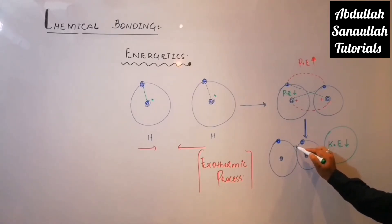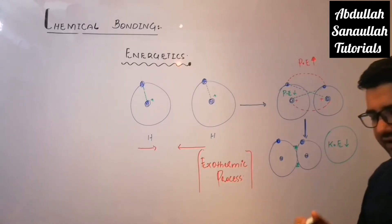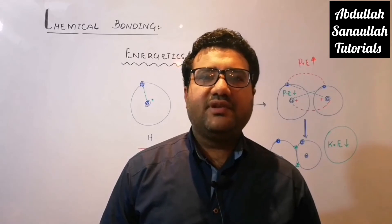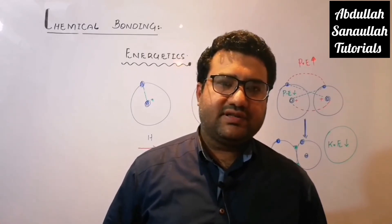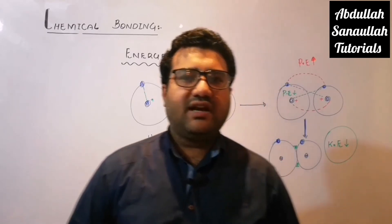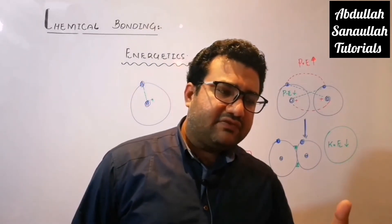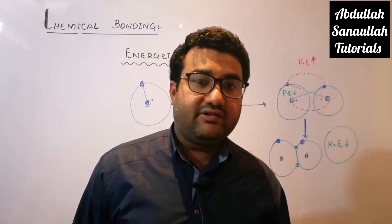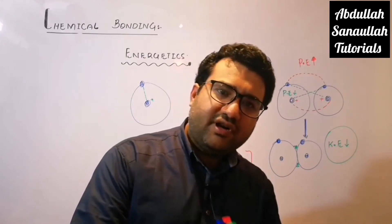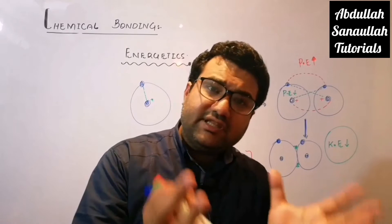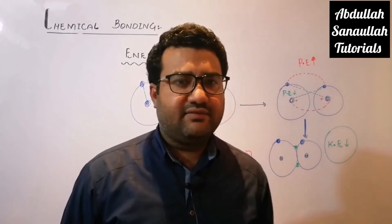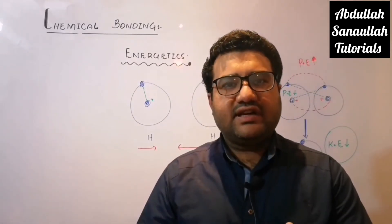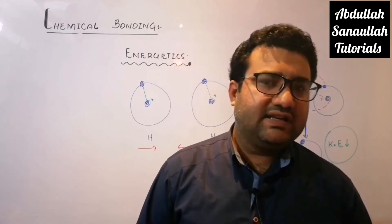Whether an atom obeys the octet rule or not makes no difference now. In the modern concept, bond formation occurs simply because it is an exothermic process — when excess energy is released from the atoms, they get stable. Whether an atom obeys the octet rule or not, in both cases excess energy will be released and stability will be gained. So today, instead of applying the octet rule, we say bond formation takes place because it is an exothermic process.